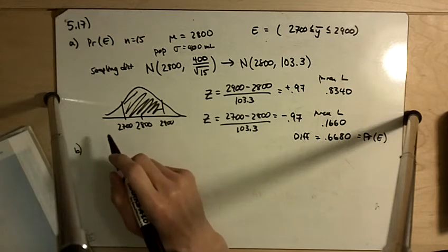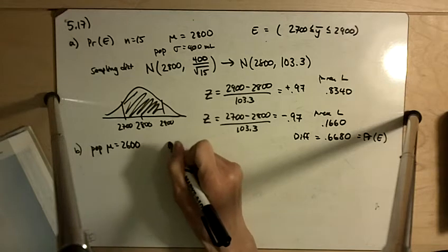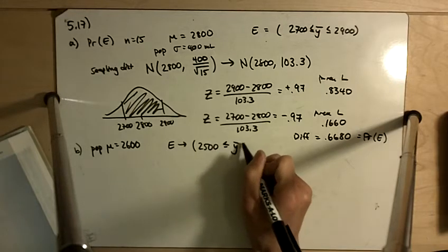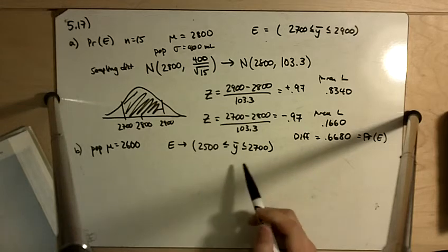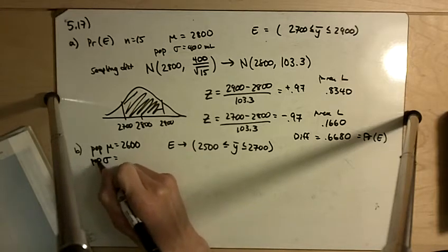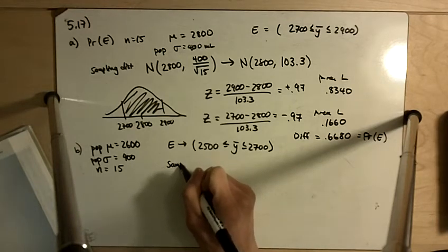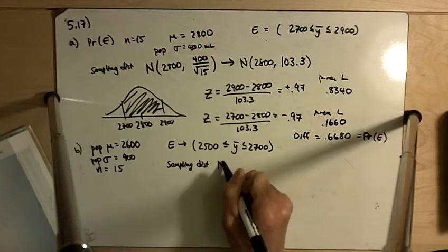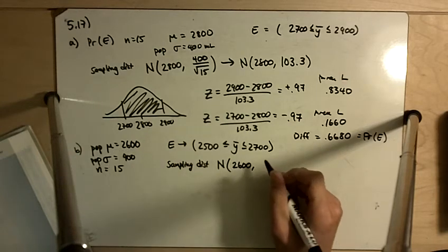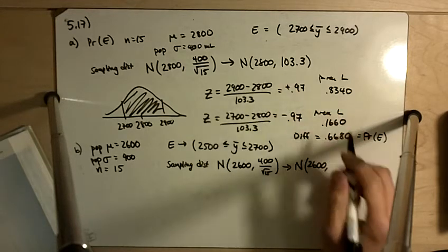Part B asks for the probability of E if the population mean is 2600. In this case, E changes so that it is 2500 to 2700, because we are still interested in getting within 100 units of the population mean. The population standard deviation is still 400, and the sample size is still 15. Our sampling distribution will be normal, centered at 2600, with standard deviation 400 over the square root of 15, which gives the same value of 103.3.